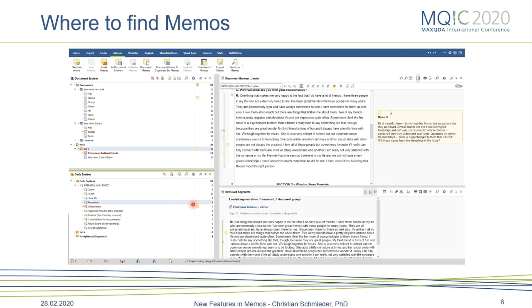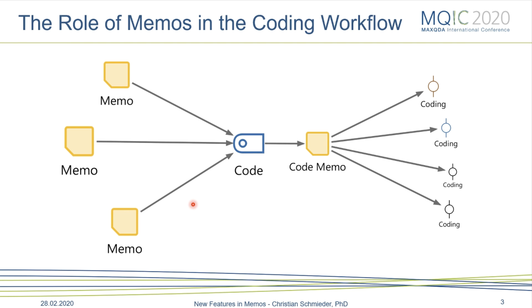Another example is that I may actually start with my memos. In an interview study I recently conducted, I first wrote case summaries as I was doing my first read through the data. I printed these memos, read them all again, and thought of potential cross-cutting themes or topics between all those memos. I created a code in MaxQDA, and as I created the code, I also created a code memo. In this code memo, I fleshed out what would potentially go into this code, and then I started coding from there. This is a step that may come before the coding process I showed earlier.